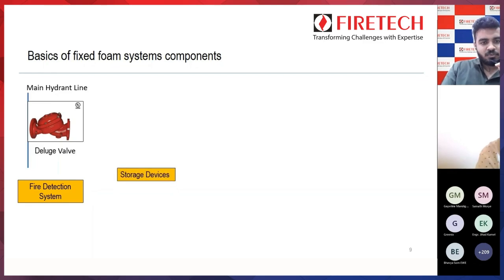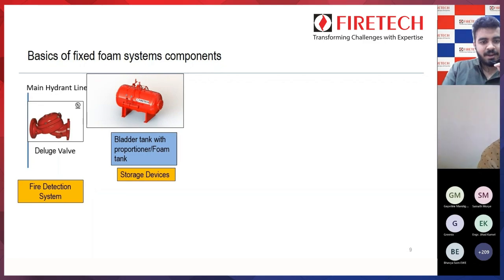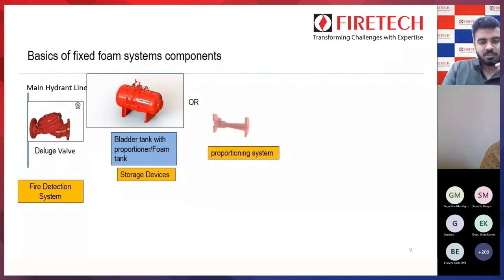Second is the storage device. In storage device we have two types: one is a bladder tank type and the other is a foam tank type. The bladder tank is not only a storage device, it is also a proportioning device. With the bladder tank there is no need to use any other proportioning equipment — your ratio controller comes pre-piped with the bladder tank. Third is the proportioning system.